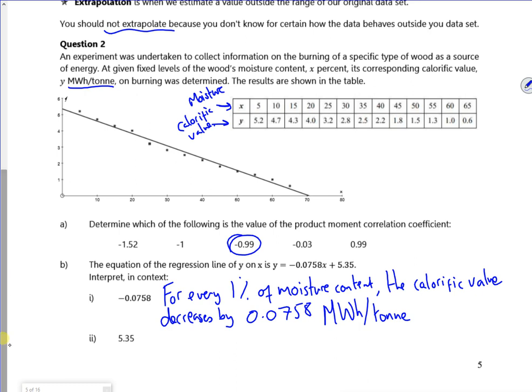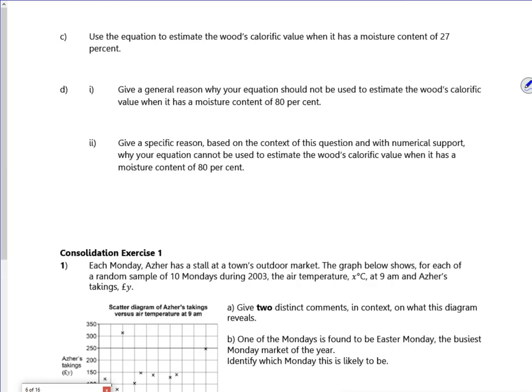So 5.35, so that's kind of like, so this is a calorific value when the wood has no percent of moisture. It's as dry as anything. It's the best thing for burning, because it's as dry as anything.